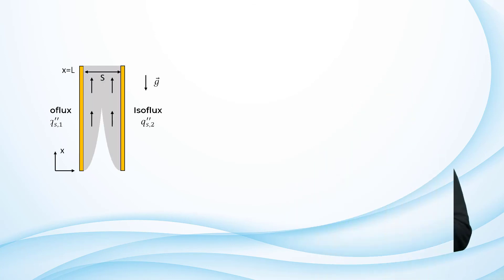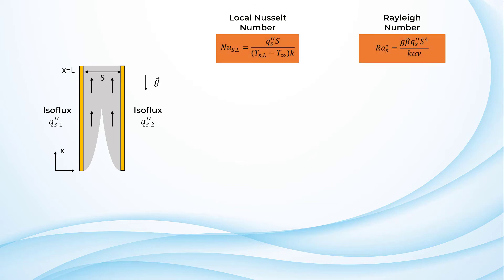Till now, we analyzed the vertical plates at isothermal condition. Let us now look at the constant heat flux condition. For convenience, we define a local Nusselt and Rayleigh numbers as shown here.